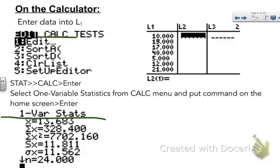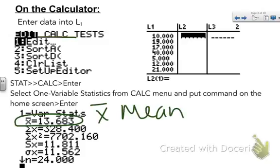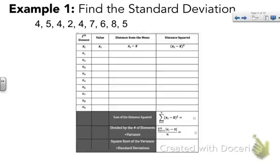It says one var stats, that's one variable statistics, and that's what you want to find your sigma, because if you look down here, sigma x is listed all the way down there. And then also notice, in this screen you can see x bar. Remember x bar stands for mean. So it gives you the mean too. Okay, so we'll find it once by hand, just so you can see where it comes from.